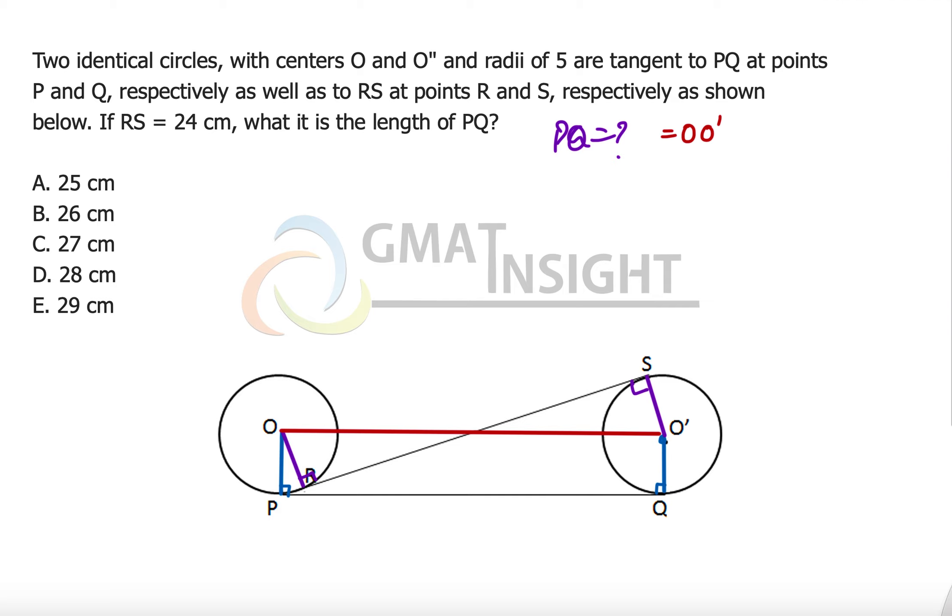So if we find out OO dash that's absolutely fine because that's going to be equal to PQ. Now we have to just understand this figure very properly. Do you see that there are these triangles - triangle ORV, that means this triangle, and we have another triangle VSO dash.